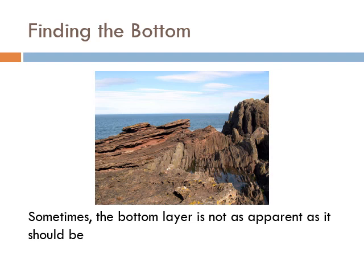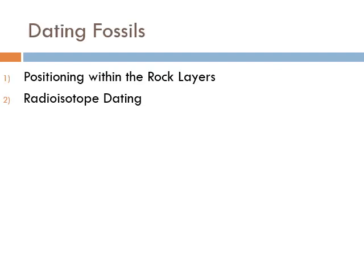First, when we're looking at geologic sediments and geologic structures, we've got to remember that the world isn't always as cut and dry as it seems. In the last lecture we said the bottom layer is the oldest, the top layer is the youngest, but sometimes the bottom layer is not as apparent as it should be. You get these weird angles in rock formations that will confuse the aging of different fossils. So we can't rely fully on the positioning within the rock layers. Sometimes we have to rely on more specific concrete metrics like radioisotope treatment.